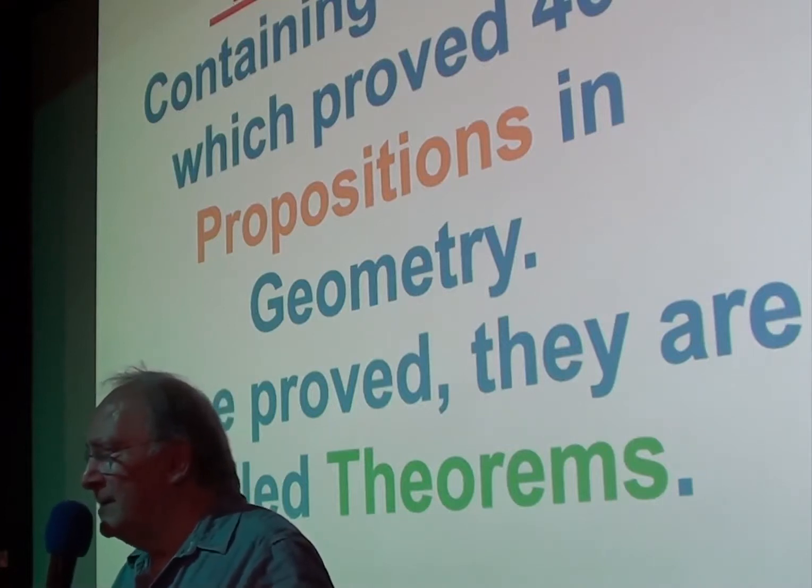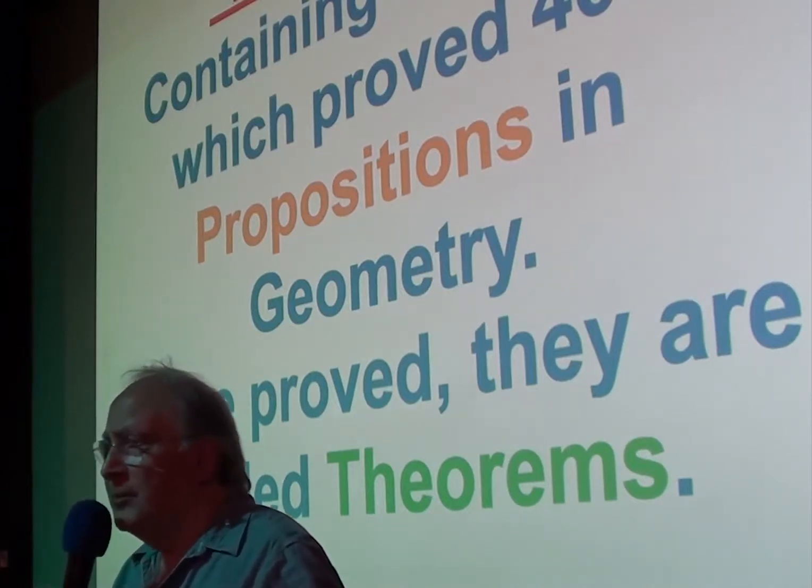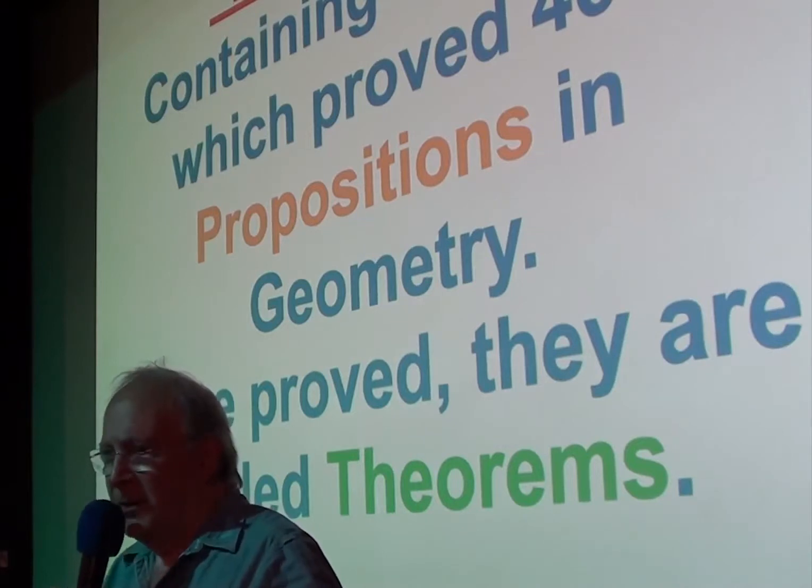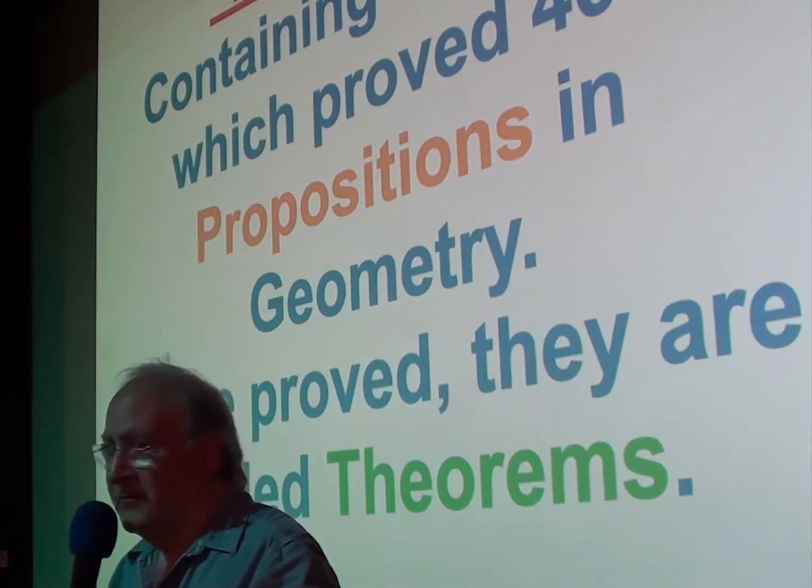All the geometry meant to be taught in schools about circles and triangles and things. So they're called propositions until he proved it. Once it's proved, it's called a theorem. Now a theorem is different from a theory. A theory you can constantly confirm, but never prove it finally. With a theorem, once it's proved, it's definitely true and can't be found false.